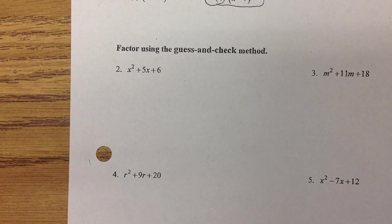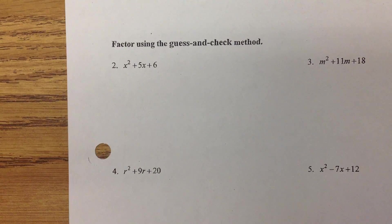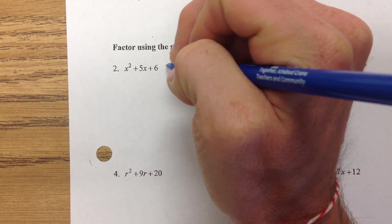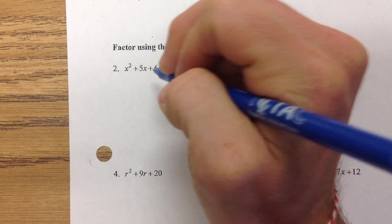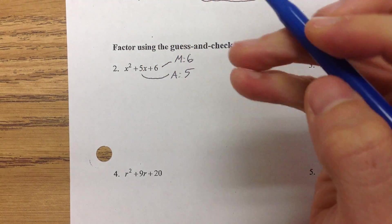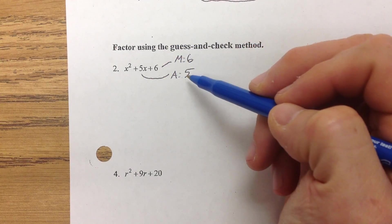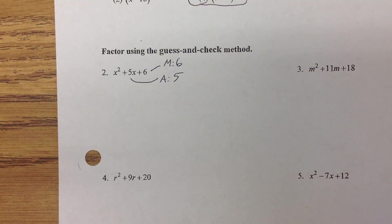All of the problems on this sheet are the same — it's just practice, practice, practice so that you get used to them. On number 2, we're looking for two numbers that multiply to a positive 6 and add to a positive 5. We multiply to the number that doesn't have the x, and we add to the number that does have the x.